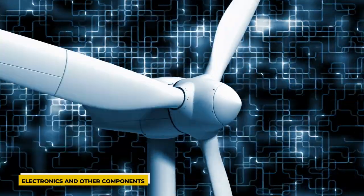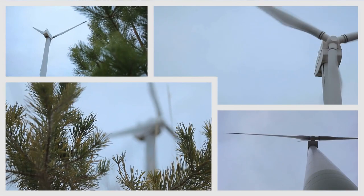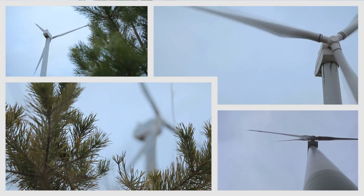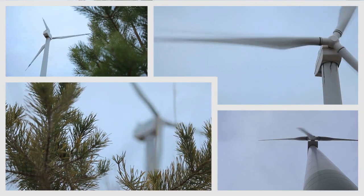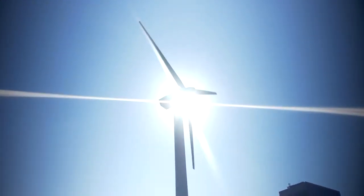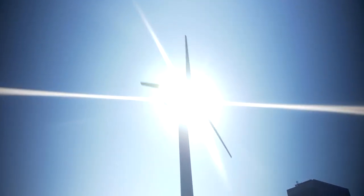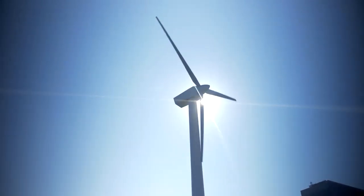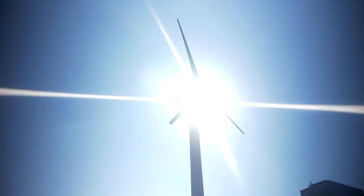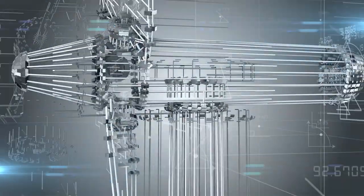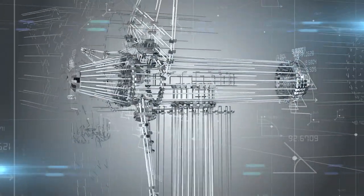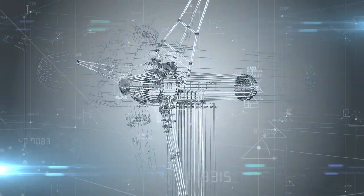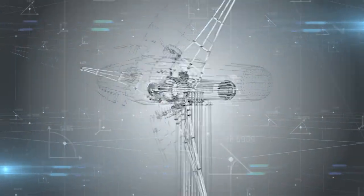Wind turbine electronics include the grid feeding system and numerous sensors. Sensors measuring wind direction, temperature, and speed are placed around the nacelle to monitor and control the turbines. Wind turbines also include components for heating, cooling, wind following, hoists, and firefighting equipment.